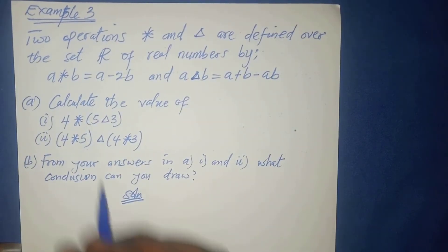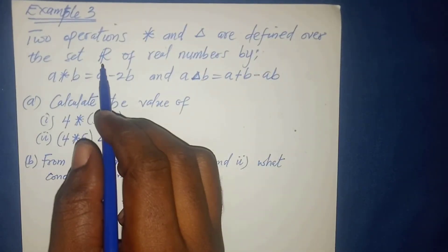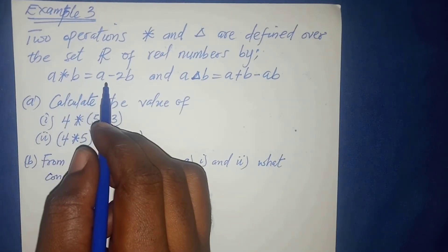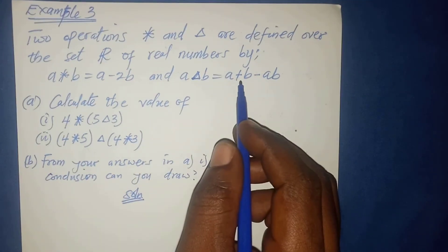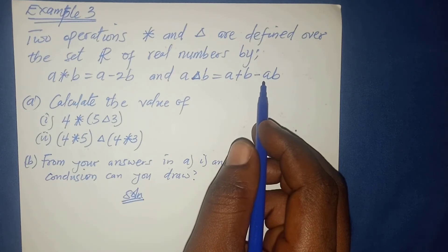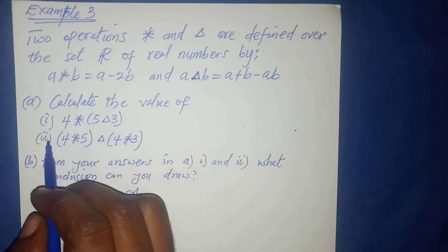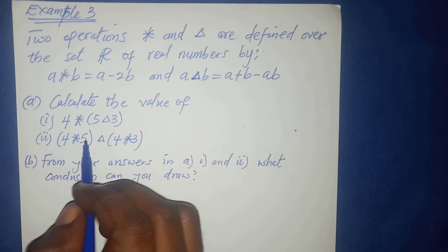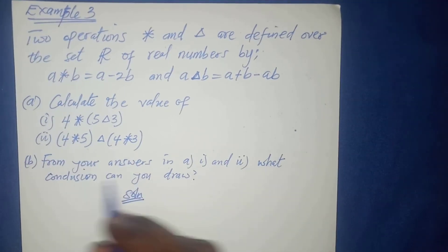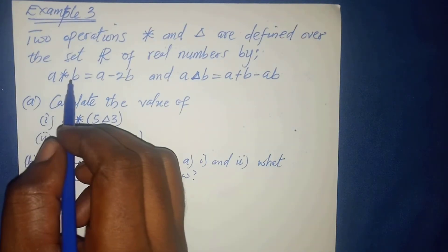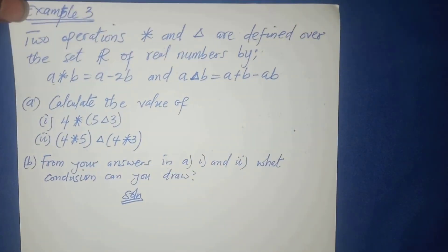In this next example, we have two operations star and triangle defined over the real numbers by a star b equals a minus 2b, and a triangle b equals a plus b minus ab. We need to calculate (i) four star (five triangle three), and (ii) (four star five) triangle (four star three).